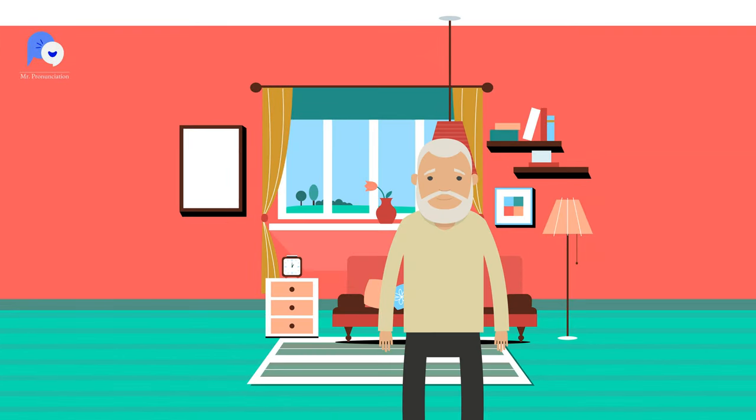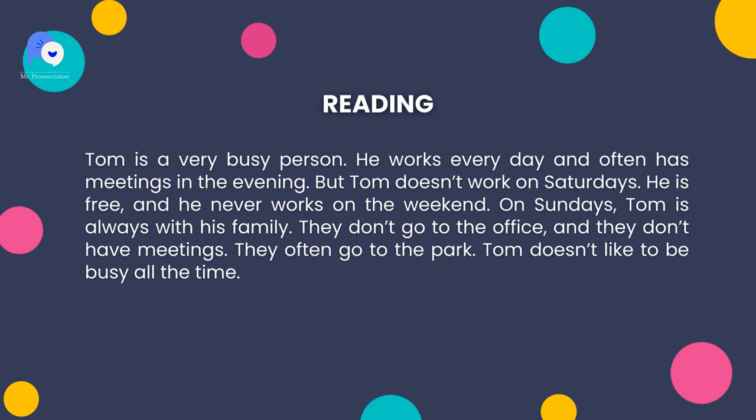Now here's the same story for you to read. Let's practice together. Tom is a very busy person. He works every day and often has meetings in the evening. But Tom doesn't work on Saturdays. He is free and he never works on the weekend. On Sundays, Tom is always with his family. They don't go to the office and they don't have meetings. They often go to the park. Tom doesn't like to be busy all the time.